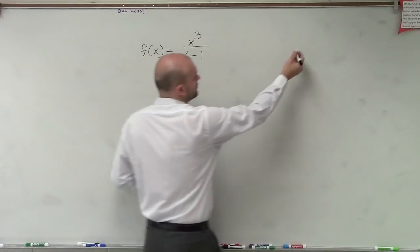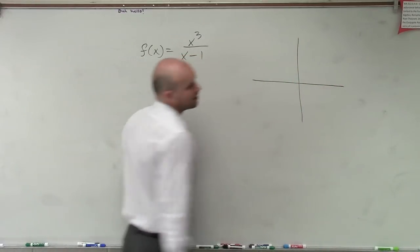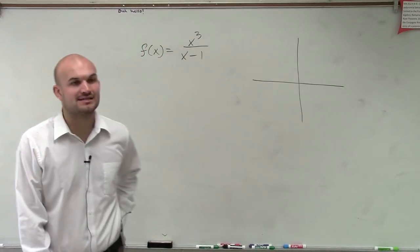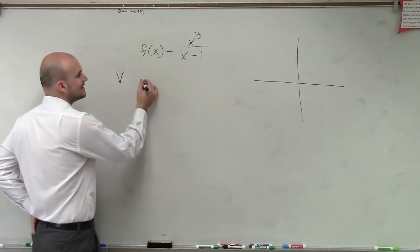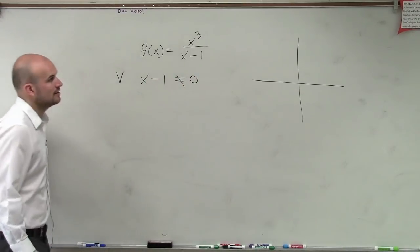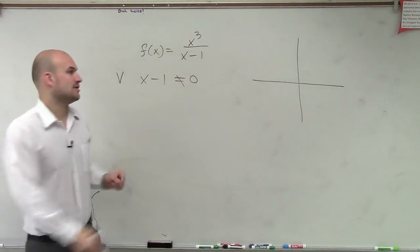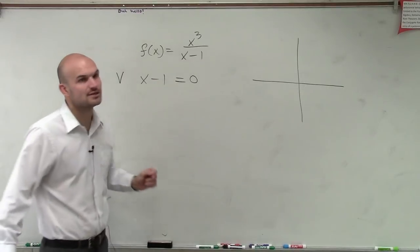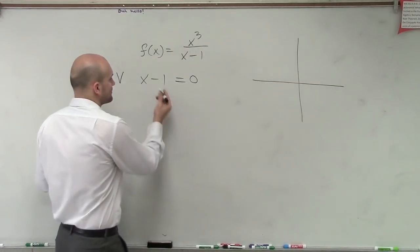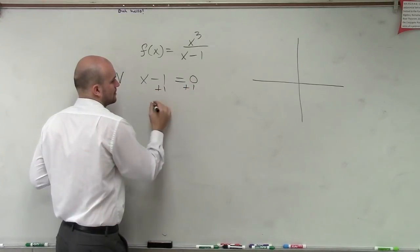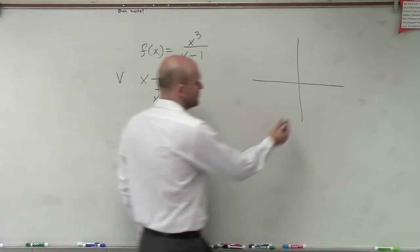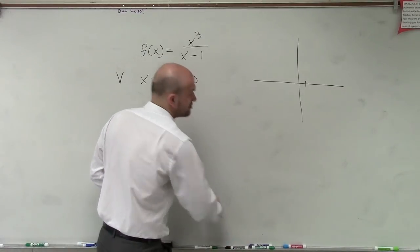When dealing with a rational function, the first thing we need to do is determine our vertical and horizontal asymptotes. We have f(x) equals x cubed divided by x minus 1. The definition of your vertical asymptote — x minus 1 cannot equal 0; this denominator cannot equal 0. So if we set it equal to 0 and solve, our vertical asymptote is at x equals 1. We go over 1 and create a dotted vertical asymptote line.